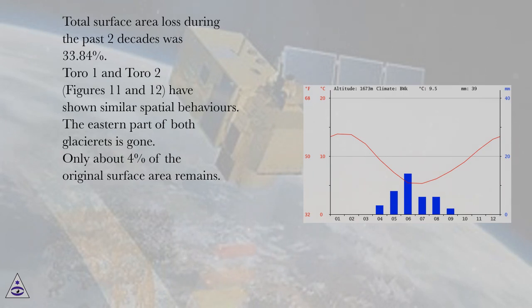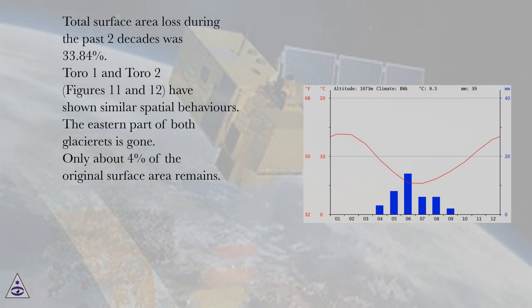Toro 1 and Toro 2, shown in Figures 11 and 12, have shown similar spatial behaviors. The eastern part of both glacier rays is gone, and only about 4% of the original surface area remains.